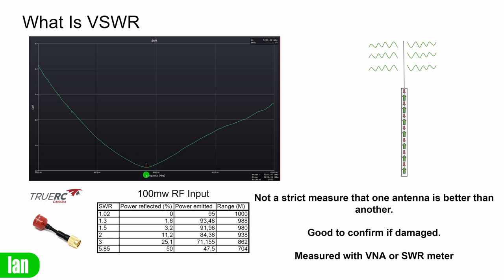Looking at this antenna on the VNA, it would be easy to think it is only going to work well at this point where the SWR is at its lowest — that is at 5820 MHz and it is 1.10. As we move down and up the band, it very quickly gets up to about 1.5 to 1.8, and it would be easy to think you should only use this antenna on 5820. However, at 1.5 we are still radiating potentially 91% of the RF energy we're sending in, compared to 95% at 1.02. So whilst this antenna does have a narrow bandwidth, that doesn't necessarily mean it's going to have poor performance as you move either side of its lowest point.